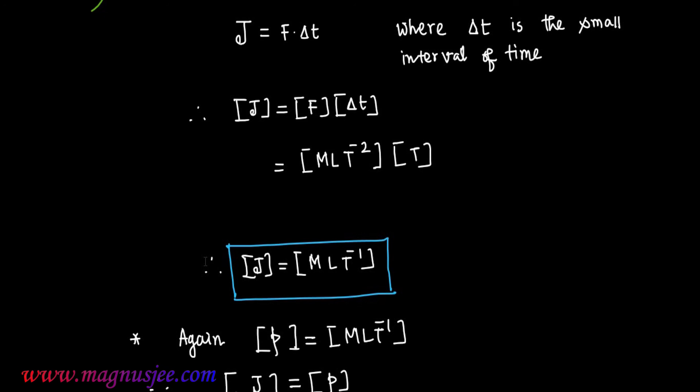That means impulse J and linear momentum p will have the same dimension.